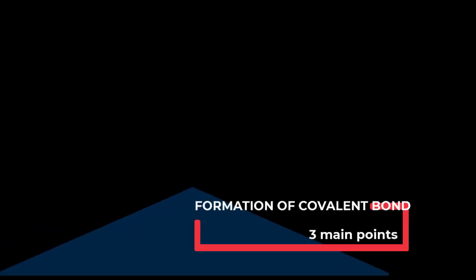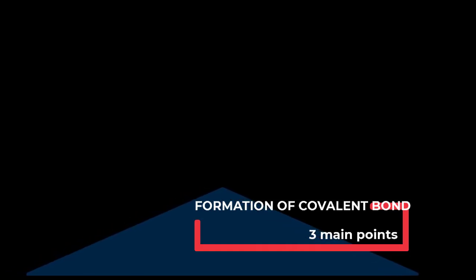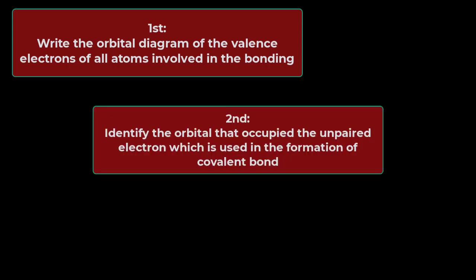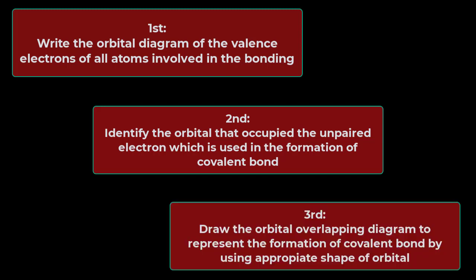Before we proceed with the examples, remember these three main points when explaining the formation of covalent bonds based on valence bond theory. First, write the orbital diagram for the valence electrons of all atoms involved in bonding. Second, observe which orbitals contain unpaired electrons used in forming the covalent bond. Third, draw the orbital overlapping diagram using the appropriate shape of orbital.